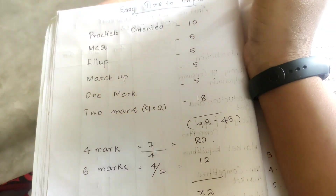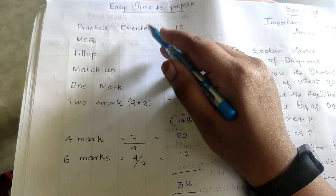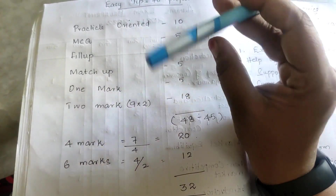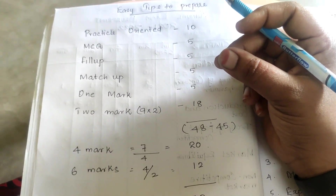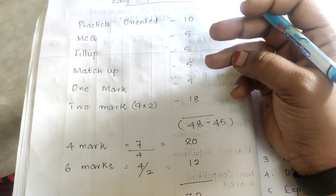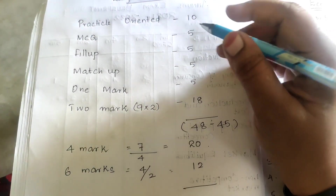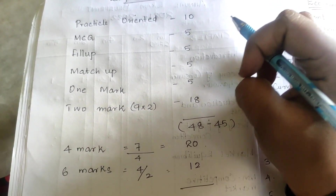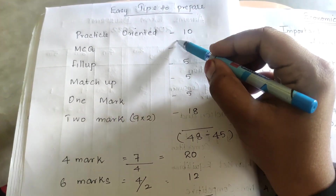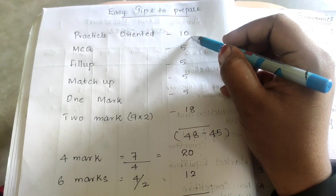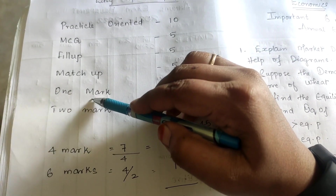Here is how to do smart work: prepare practical oriented questions first, because at any cost two questions will surely be asked — one on demonetization, one on consumer behavior — and there will also be fill-in-the-blank questions regarding AP, MP, and TP. With a little effort you can easily secure these ten marks.